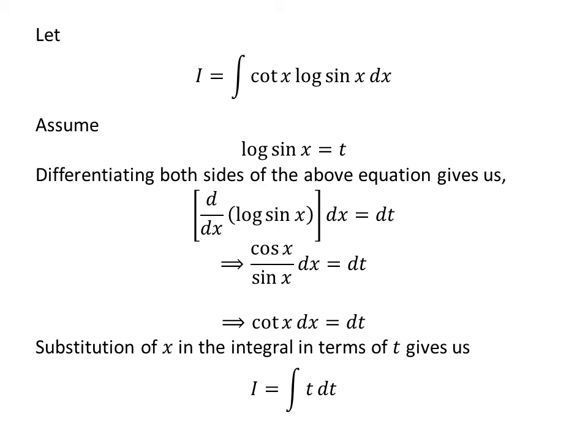Substitution of natural log of sin of x by our assumed value t and cotangent of x times differential of x by differential of t in the integral I gives us I is equal to integral of t with respect to t.